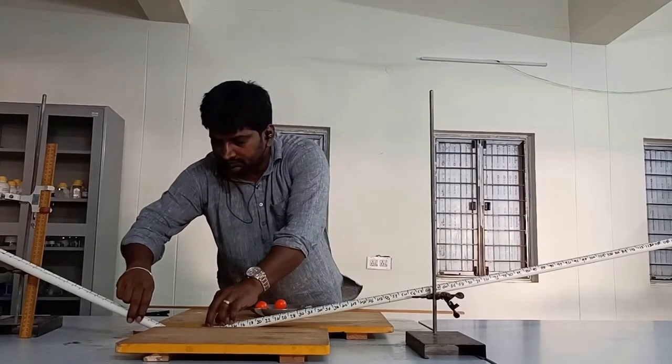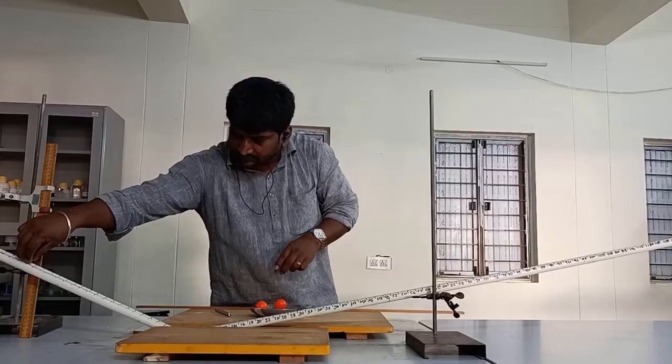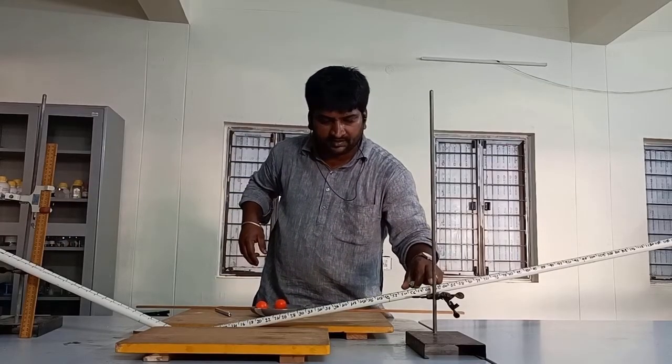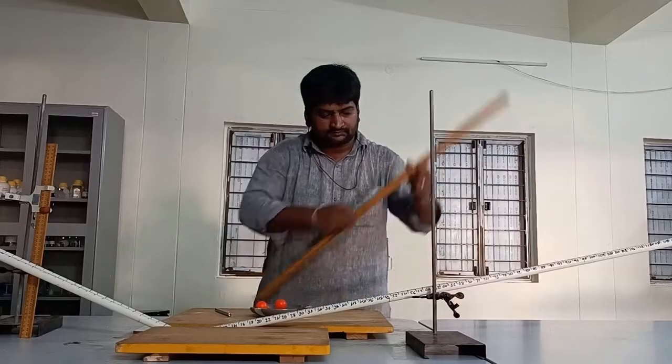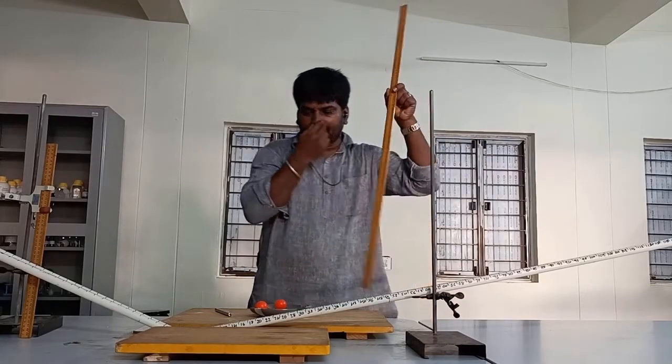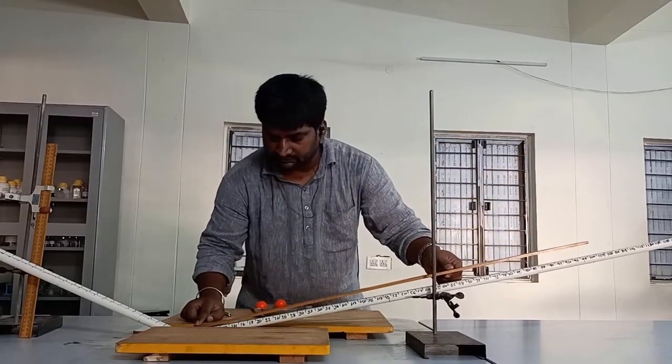The ball reaches a certain height which is lower than the height of the first inclined plane and keeps trying to reach the same height. If the frictional force increases, the height keeps on reducing.